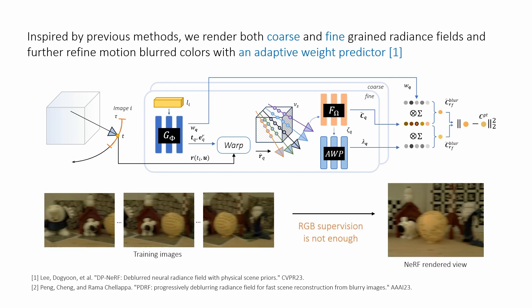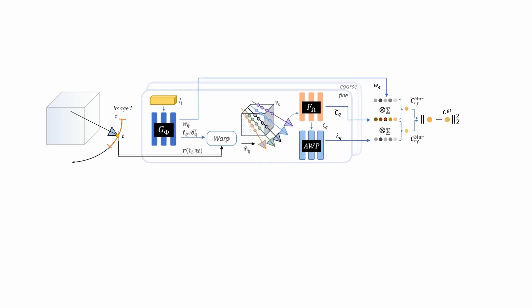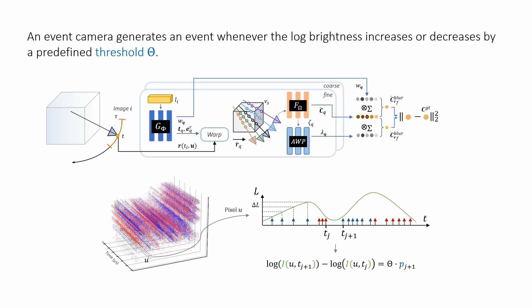Since motion-blurred images can exhibit severely corrupt details, relying solely on these images does not guarantee consistent deblurring results. We employ event-based cameras to overcome this issue.